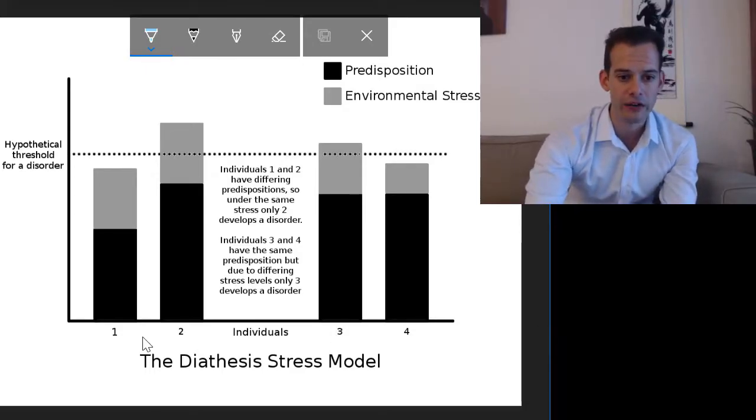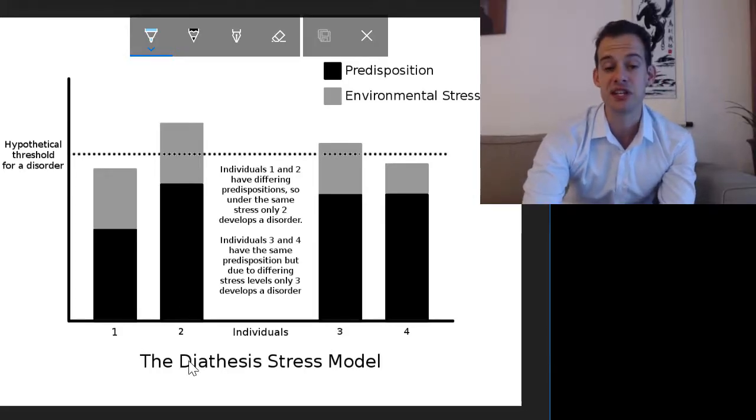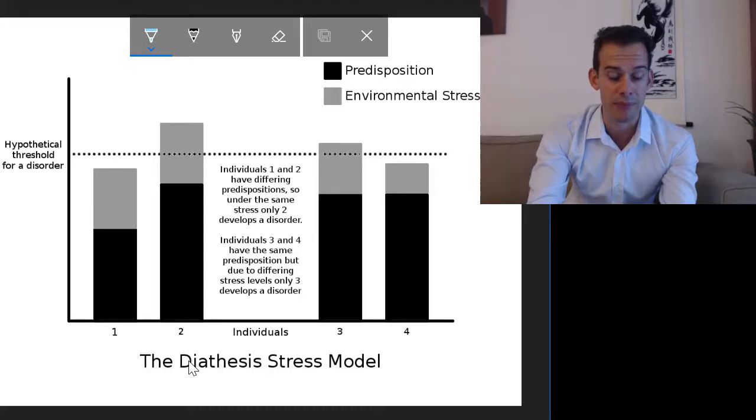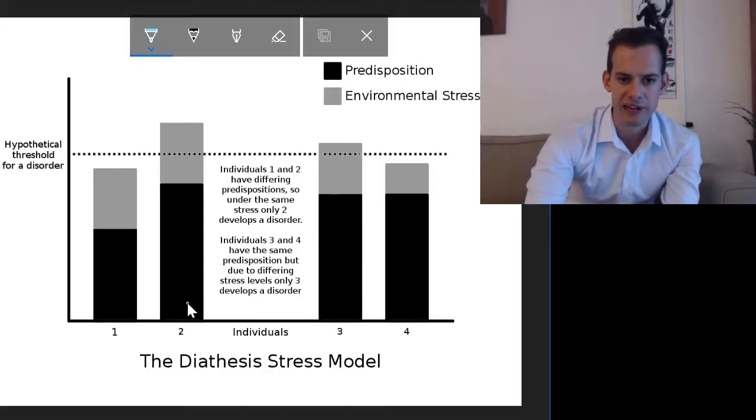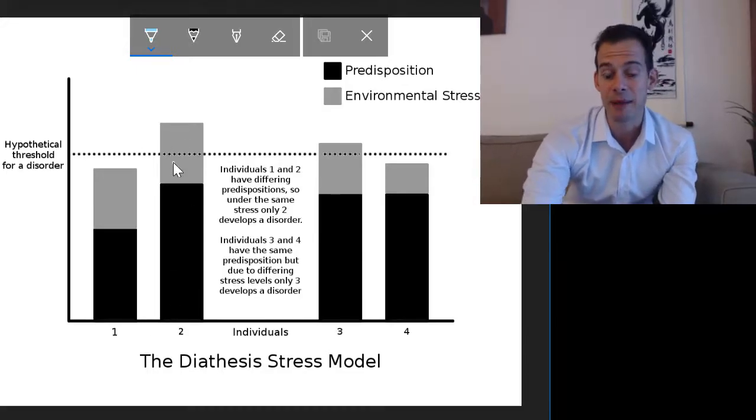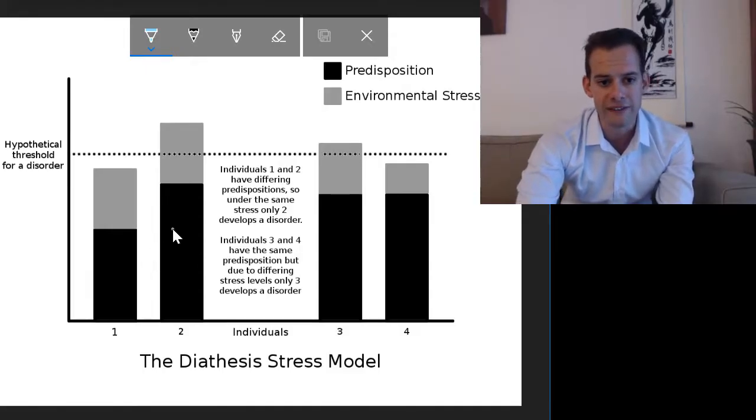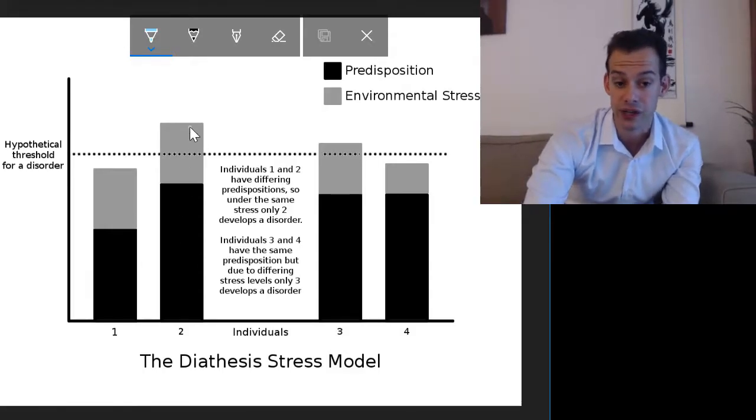What we can see with individuals one and two here on this chart is that they have differing predispositions for whatever disorder might be represented here. In the face of the same amount of environmental stress, the gray section here, these two individuals have the same environmental stress but because they have different predispositions only individual two will develop this mental illness.